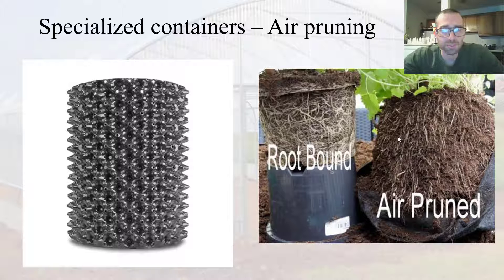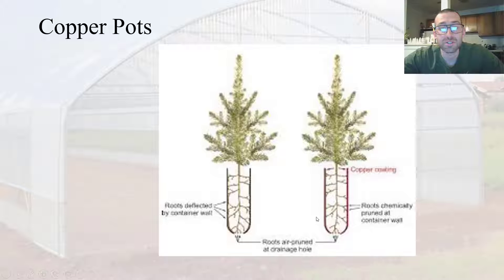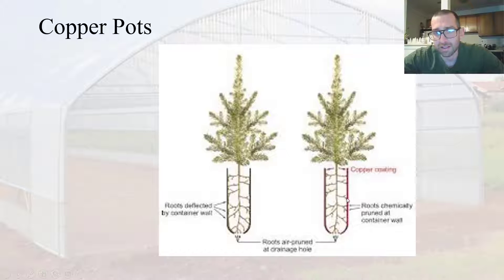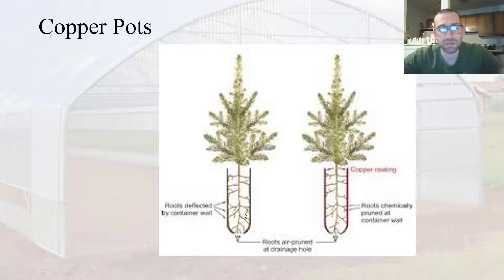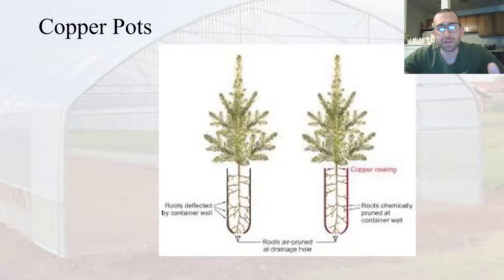They also make copper pots or pots that have a copper lining, and that acts to chemically prune your roots as they touch the lining. In a normal container those roots will continue to grow, but if there's a copper lining, as they hit that copper they're going to get pruned off right there, so you don't have that root-bound problem. This is more of an issue with larger trees or shrubs as opposed to herbaceous plants, but something to be aware of.